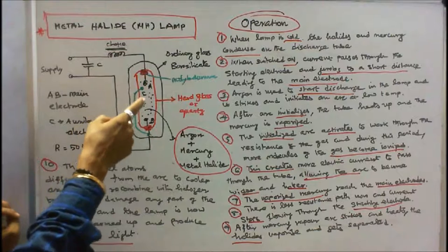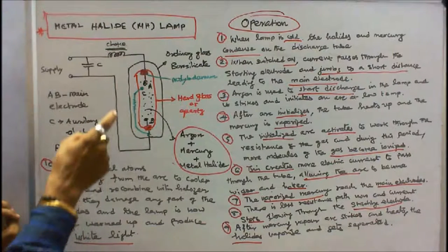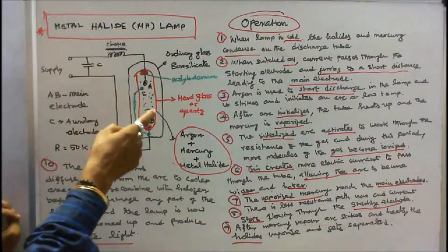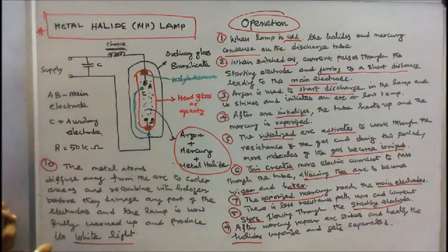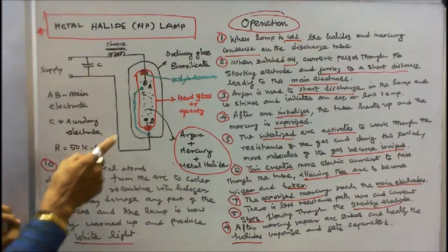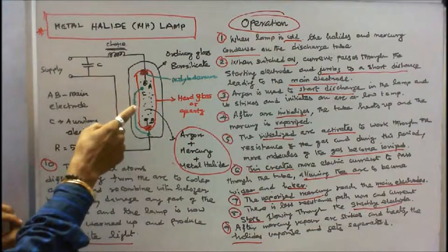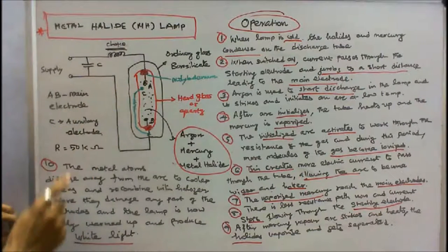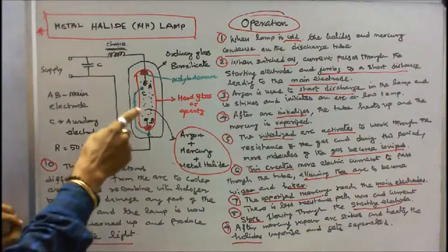Argon is used to start discharge in the lamp and it strikes and initiates an arc at low temperature. The laser arc initializes, the tube heats up, and the mercury is vaporized.